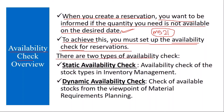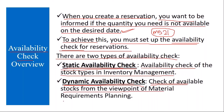There are two types of availability check. One is the static availability check, and the next is the dynamic availability check. Static availability check is the availability check of stock types in inventory management — it just checks whether stock is available or not. Dynamic availability check means checking available stocks from the viewpoint of MRP. Along with the existing physical stock, it checks receipts and planned issues, taking all those things into consideration.